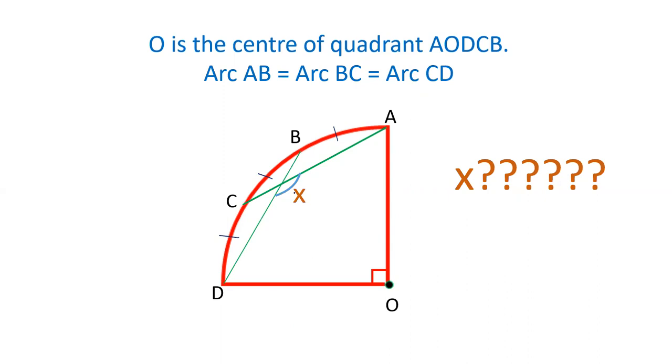AC and BO are joined. The angle which is made between these two lines is x. We have to find out the value of x. So let's see how we can solve this question.